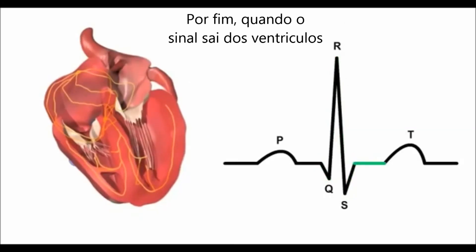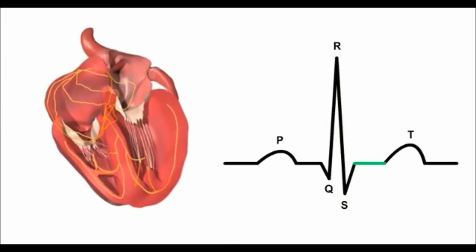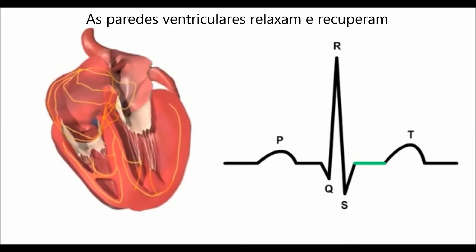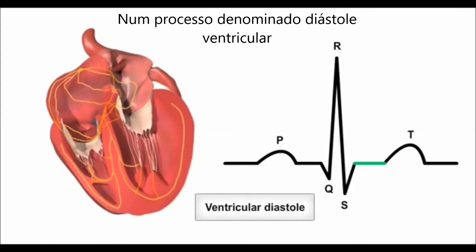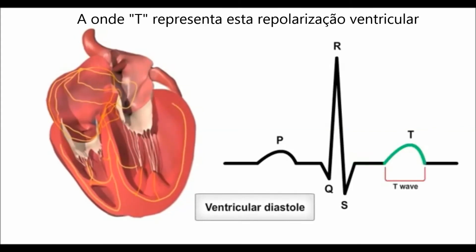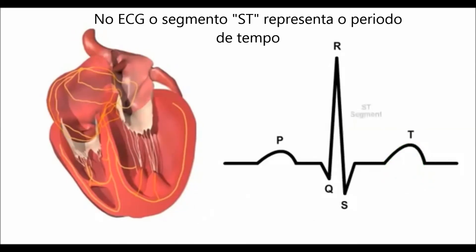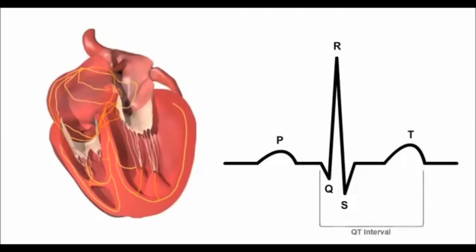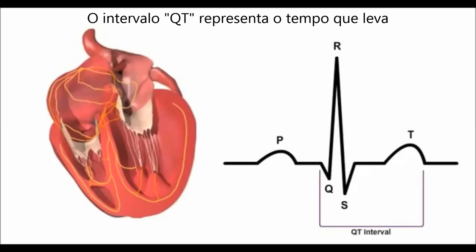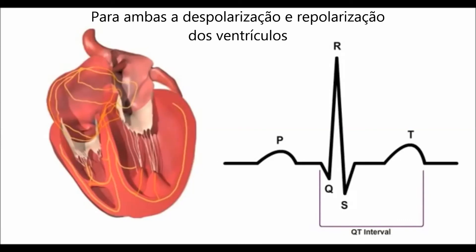Finally, as the signal passes out of the ventricles, the ventricular walls start to relax and recover, a state described as ventricular diastole. The dome-shaped T wave on the ECG marks this ventricular repolarization. The ST segment depicts the period when the ventricles are depolarized. The QT interval represents the time it takes for both depolarization and repolarization of the ventricles to occur.